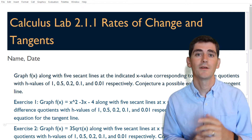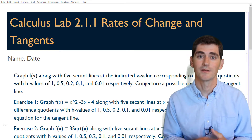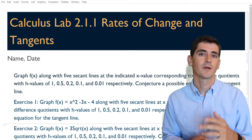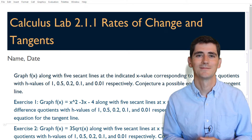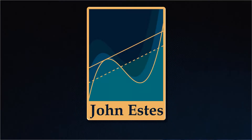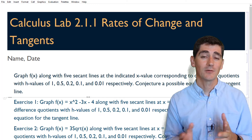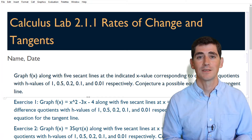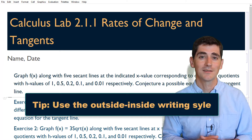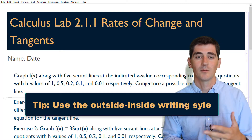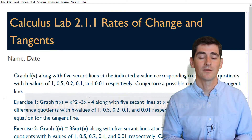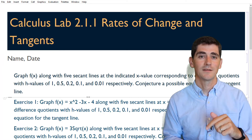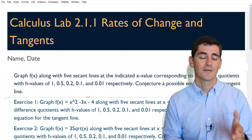Calculus is all about rates of change, and we're going to do that today by looking at equations of tangent lines. But how do we find the equation of a line when algebra won't be enough? This is our Calculus Lab 2.1.1: Rates of Change and Tangents. If you haven't looked at our intro to mathematical lab yet, I advise you do that first. We're also using the outside-inside writing style and Stewart's Calculus: Early Transcendentals as our reference text.